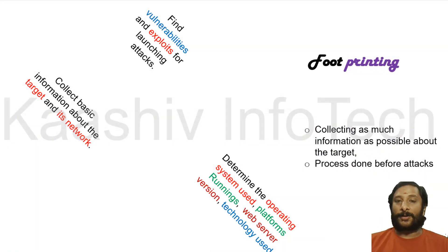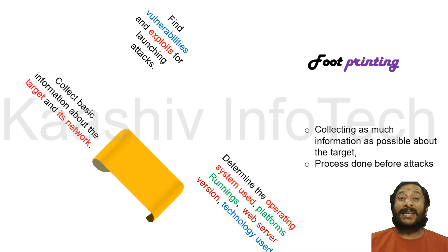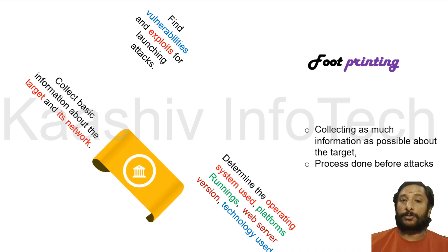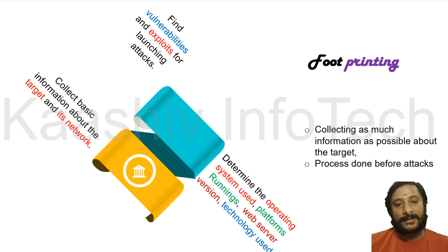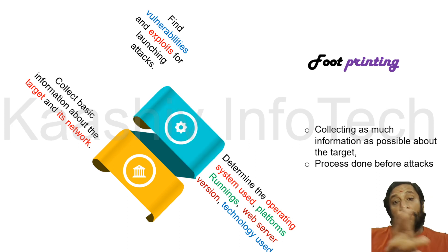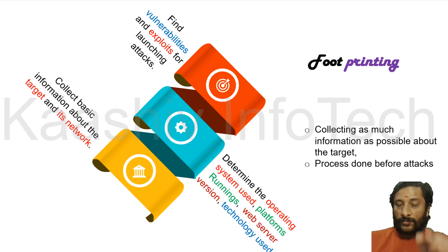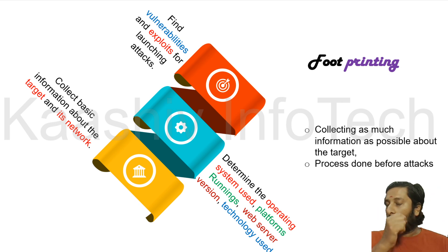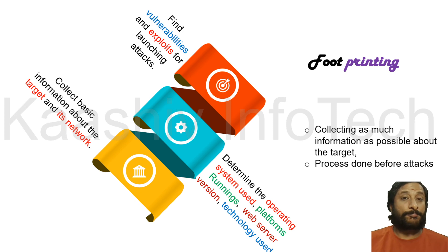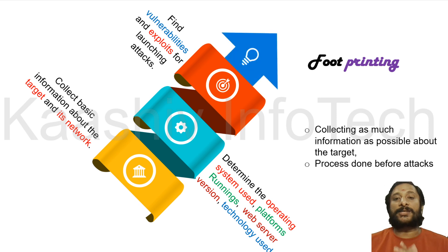Footprinting involves collecting basic information about the targets: information about the operating system, technology used, web server, and the platform it's running. Based on the weakness of the software or operating system, hackers identify the vulnerability and inject it using exploits. Getting this information is called footprinting — collecting information.